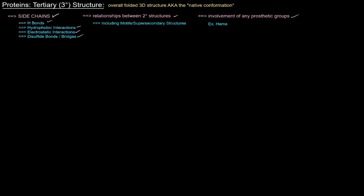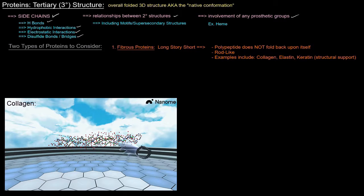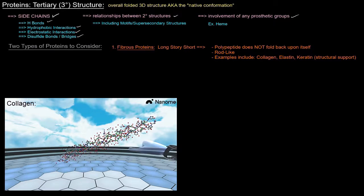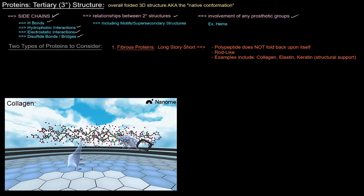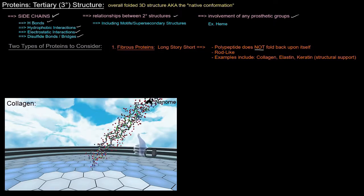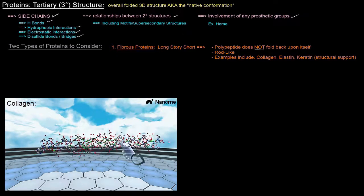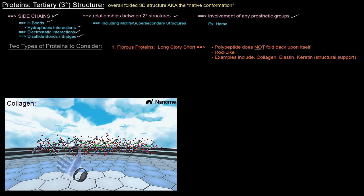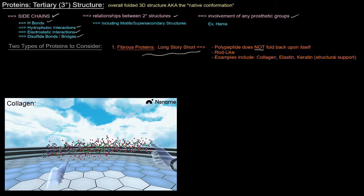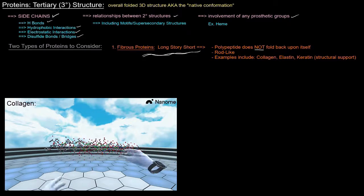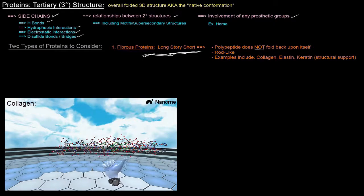When it comes to tertiary structure, there are two types of proteins. There are fibrous proteins — the short story is that the polypeptide does not fold back upon itself. These are rod-like proteins, and examples include collagen, elastin, and keratin. They're all meant for structural support, serving as long fibers or little rods with a structural purpose.